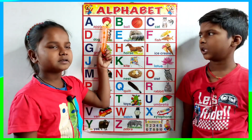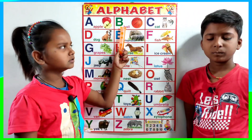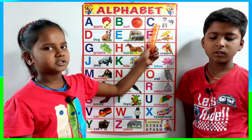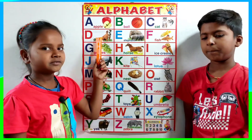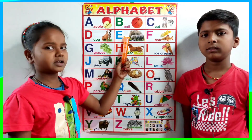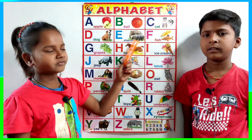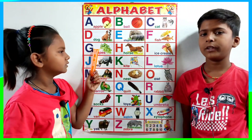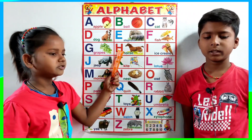A for apple, B for ball, C for cat, D for dog, E for elephant, F for fish, G for grass.